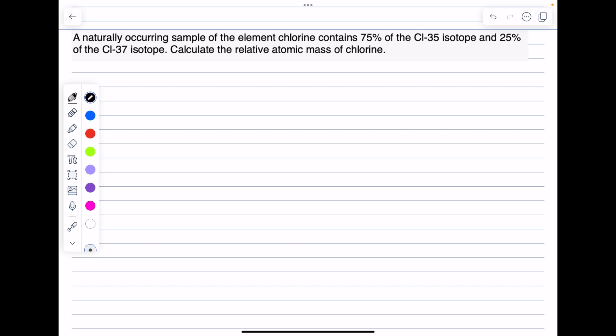So we'll dive in with this question. This is more of an IGCSE, GCSE type question, but it's good to get our eye in. A naturally occurring sample of the element chlorine contains 75% of the Cl-35 isotope and 25% of the Cl-37 isotope. Notice that in total your percentage should add up to 100%, which it does. Calculate the relative atomic mass of chlorine.